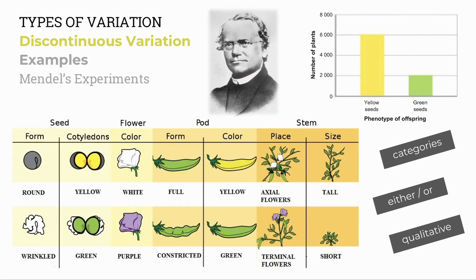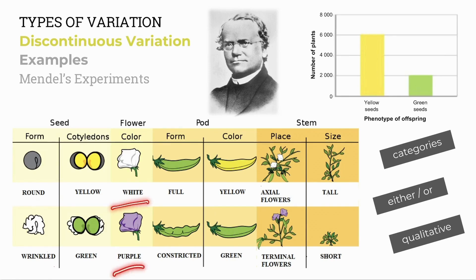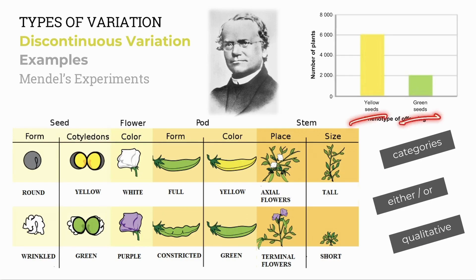Other examples of discontinuous variation are seen in Mendel's experiments. Mendel used pea plants as they had very distinct categories — either-or characteristics: either round seeds or wrinkled, either white flowers or purple flowers, with no in-between forms. The data was qualitative as he could describe the colours and plot them in a bar graph.